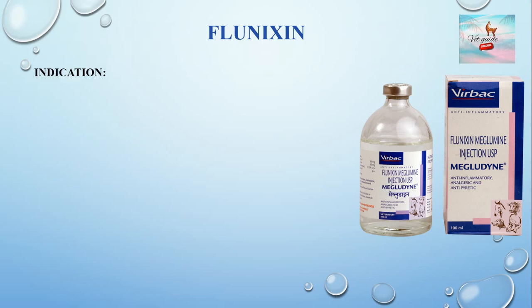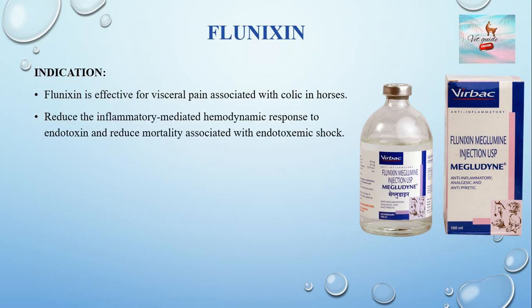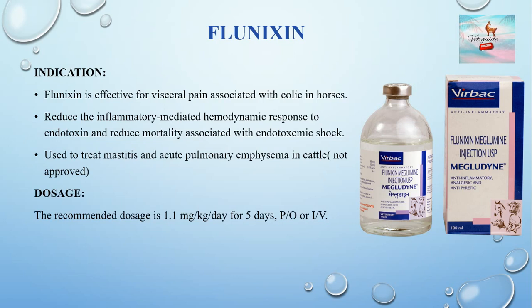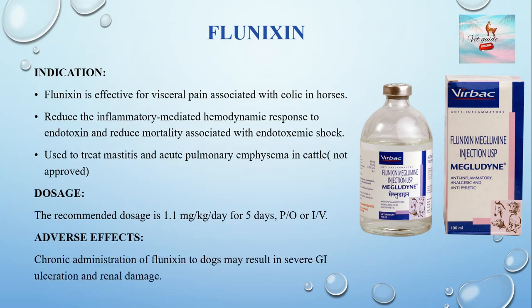Flunixin is effective for visceral pain associated with colic in horses. It reduces the inflammation-mediated hemodynamic response to endotoxin and reduces mortality associated with endotoxemic shock. It is also used to treat mastitis and acute pulmonary emphysema in cattle, though it is not approved for this use. The recommended dosage is 1.1 mg/kg per day for 5 days, orally or intravenously. Chronic administration in dogs may result in severe gastrointestinal ulceration and renal damage.